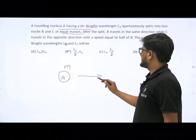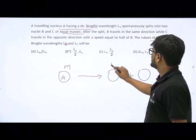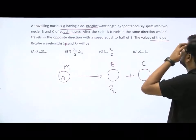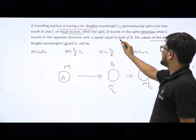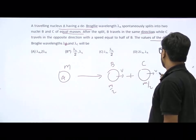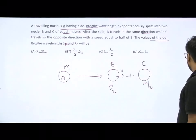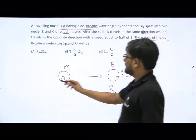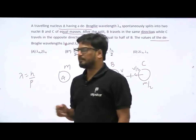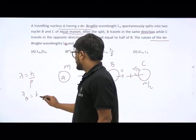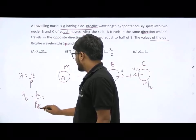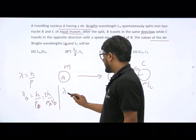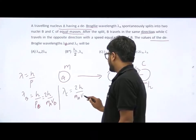Nucleus A has mass M and splits spontaneously into B and C, each with mass M/2. B travels in the same direction, C in the opposite direction with speed V/2. Using de Broglie relation, lambda = H/P, lambda B = H/(mass of B × velocity of B) = H/((M_A/2) × V_B), and similarly lambda C = H/((M_A/2) × V_C).